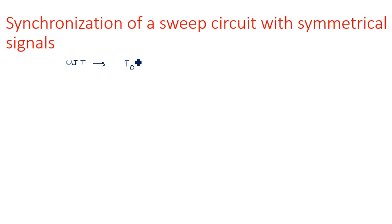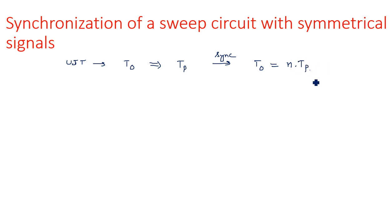The UJT relaxation oscillator has a standard oscillation period T0. This period is synchronized with the pulse period TP — that may be one time, two times, three times, or n number of times. After synchronization, T0 will equal n times the pulse period TP (n varies from 1 to infinity). This means the standard oscillation period can be converted into any desired time period. TP is the time period of the pulse waveform used for synchronization.